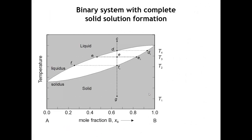Now let's look at a different kind of phase diagram where the solids form what's called a solid solution. A solution means a homogeneous mixture — liquids often are, gases always are, but solids can also form a homogeneous mixture. You get that in something like silver and gold: they both have a cubic close-packed structure, and you can mix any ratio of silver to gold and just have a random distribution of the atoms on the lattice.